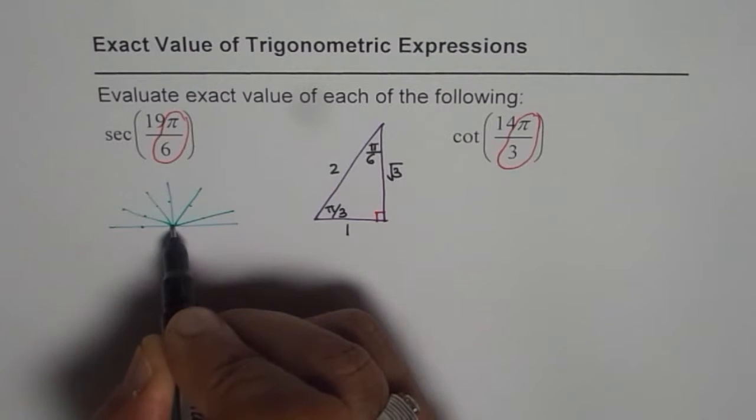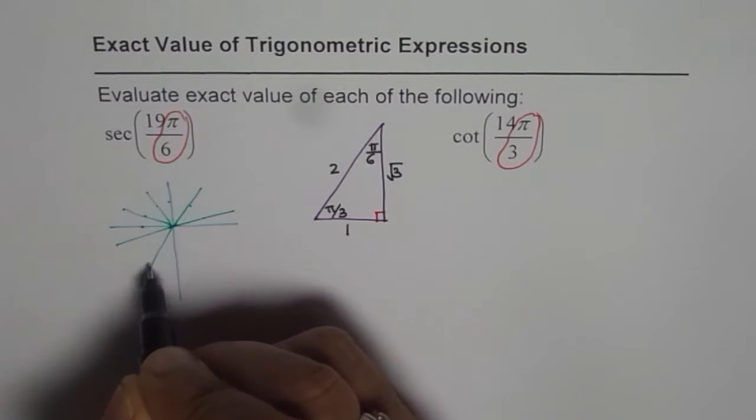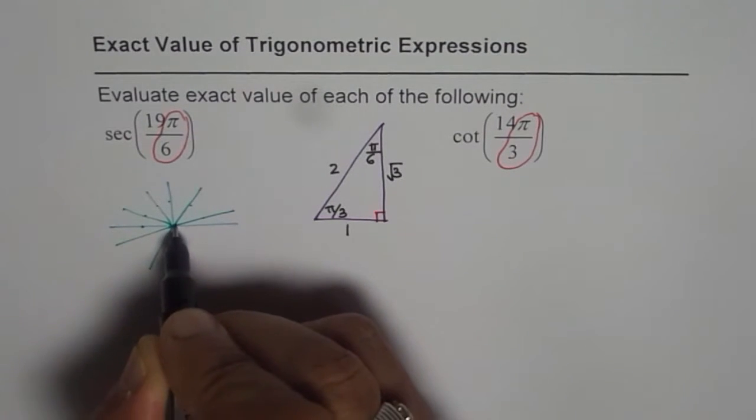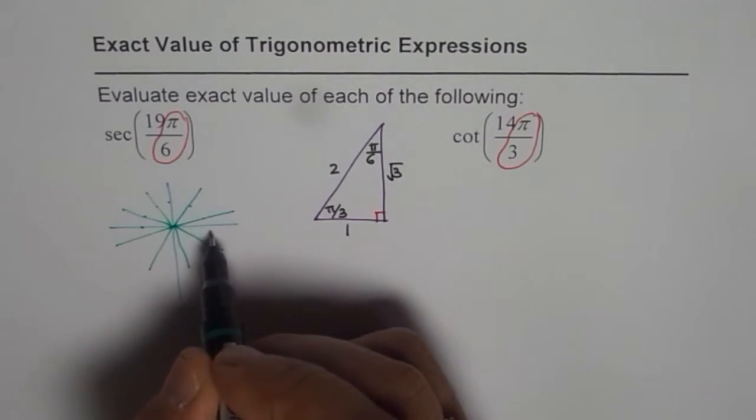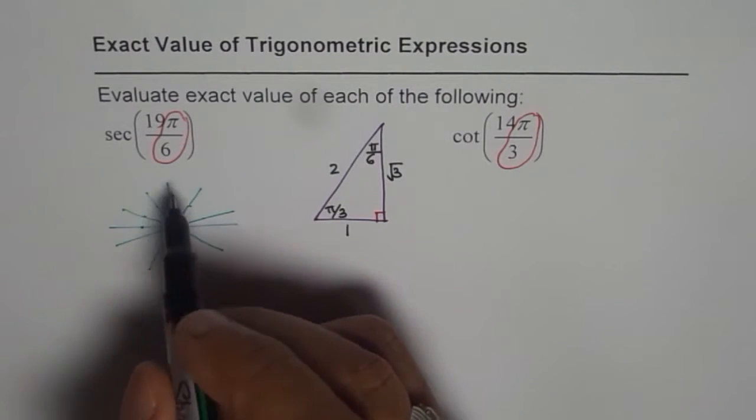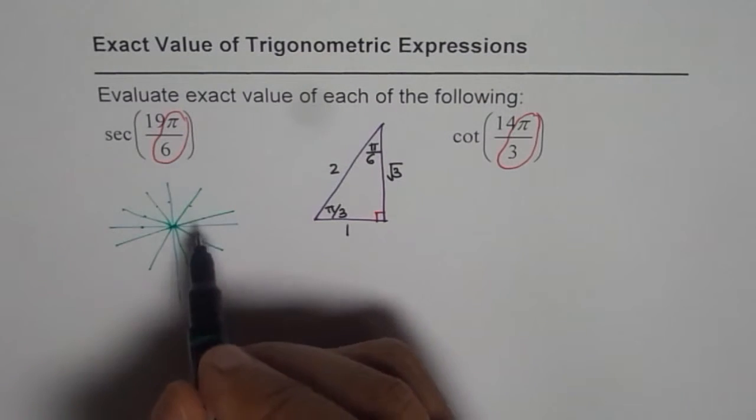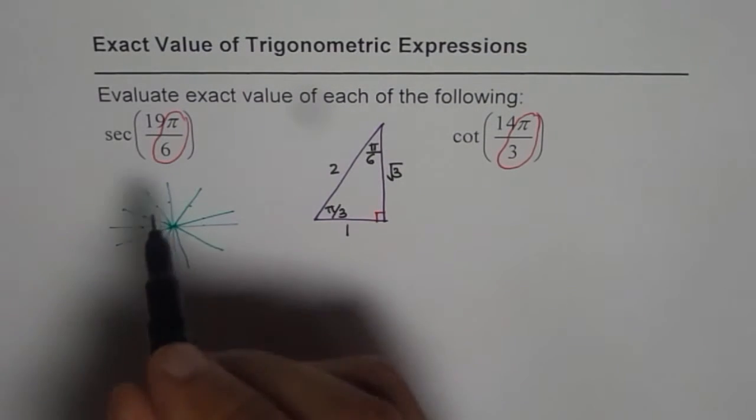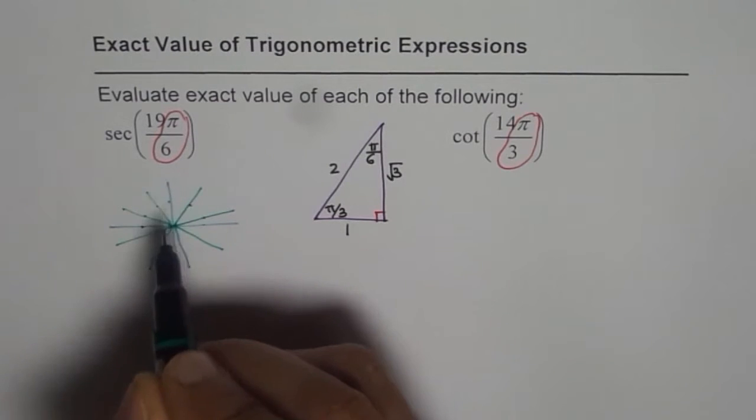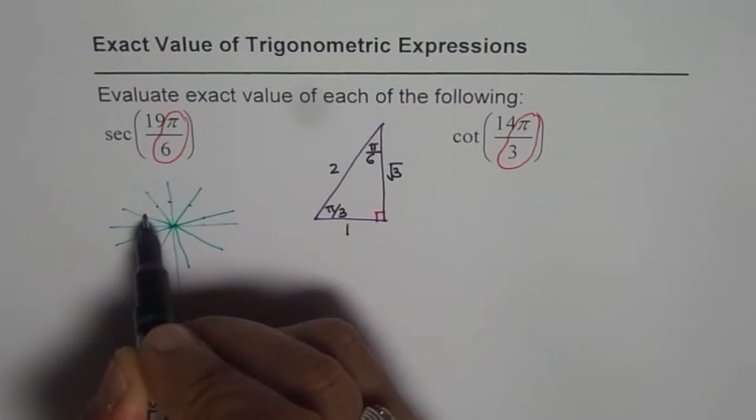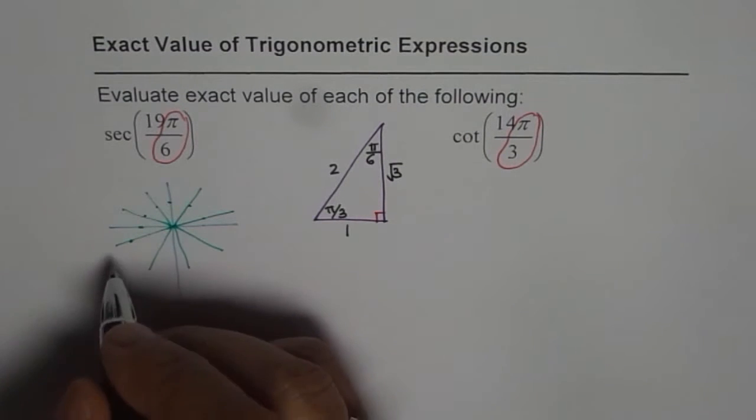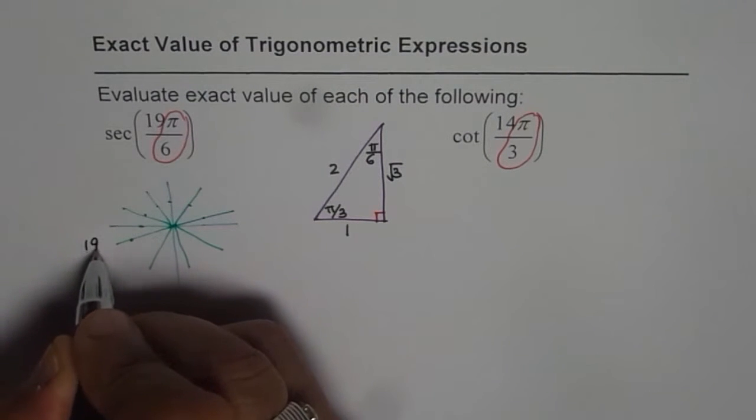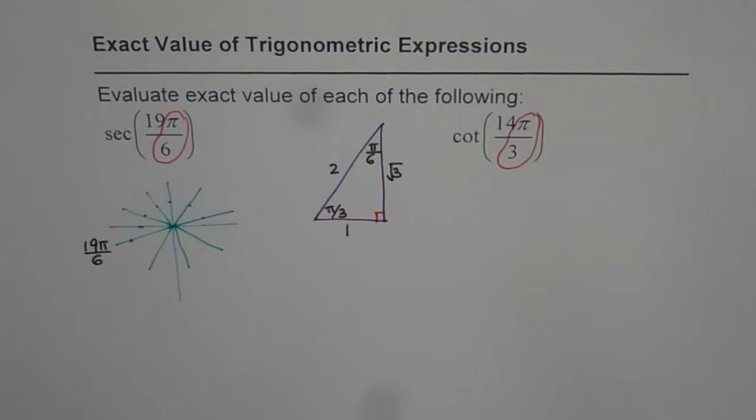So 2π is divided into 6 and 6, 12. So that means 1 full circle, 12 and then we have to go up to 19. So let's count after 12. 13, 14, 15, 16, 17, 18, 19. So we can say that position represents 19π by 6.